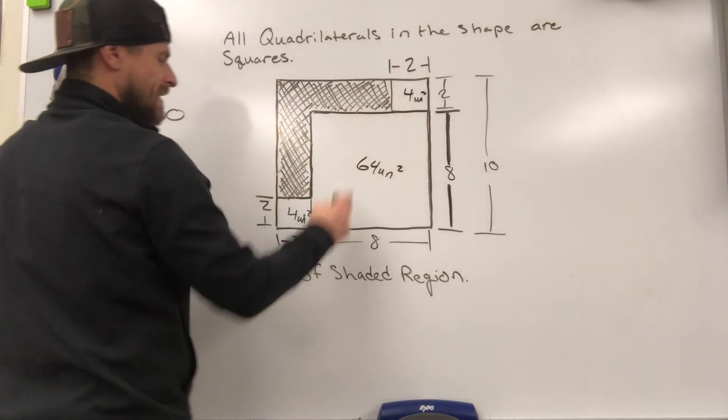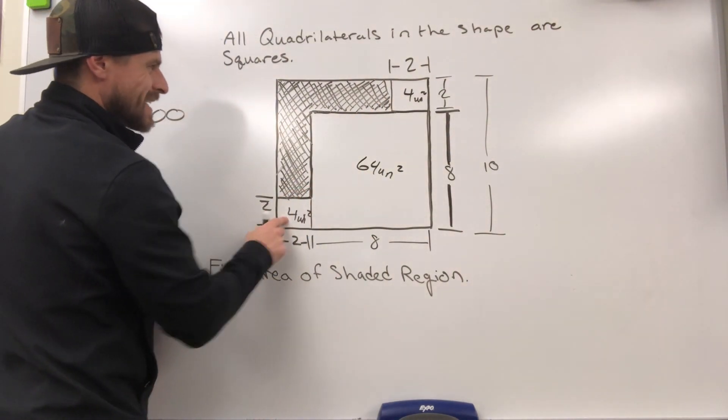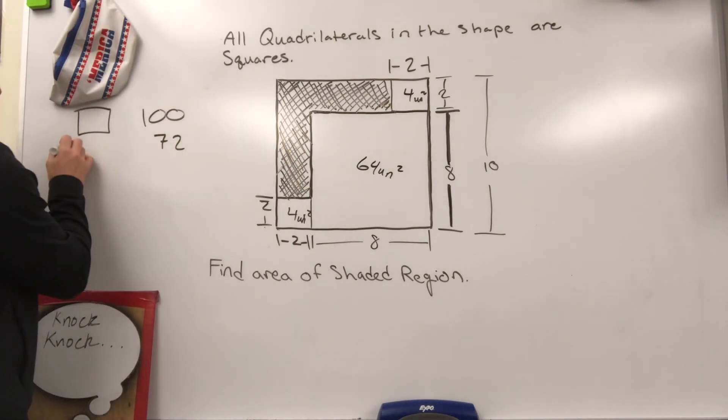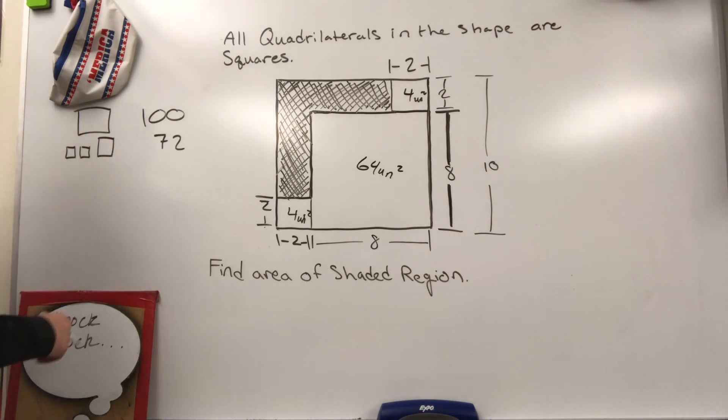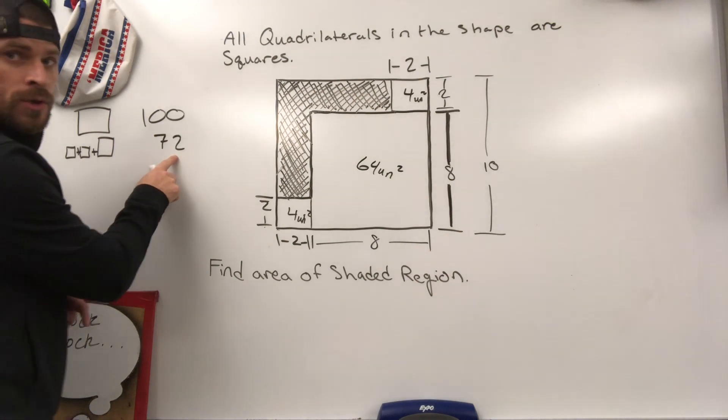So 4, 4, and 64 for a total of 64 plus 4 makes 68 plus 4 makes 72. So we got 72 units in the small square, the other small square, and then the medium-sized square. Okay, so if you were to add all those up, we get 72 units squared.